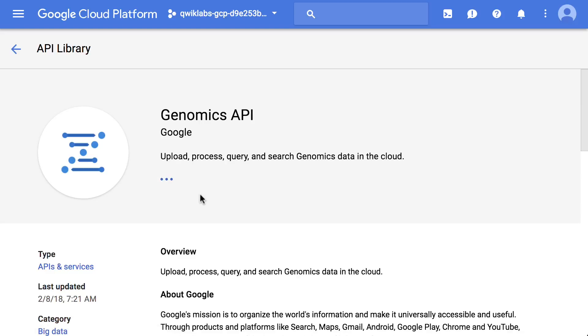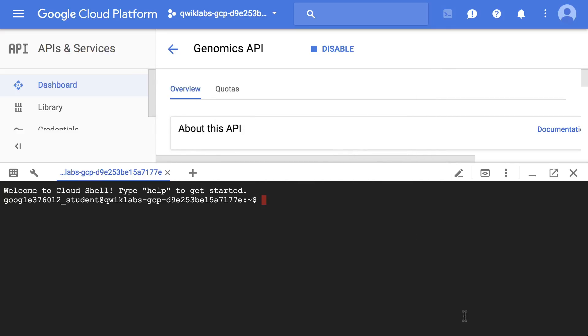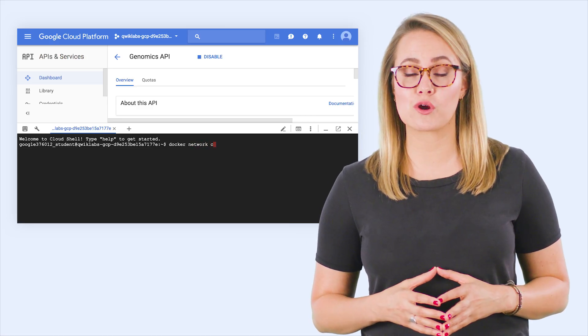Now let's see how this works. To get started with this lab, you'll have to enable the Genomics API. We run some commands in Cloud Shell to run the HTS-GET server and attach it to a local Docker container network named test.